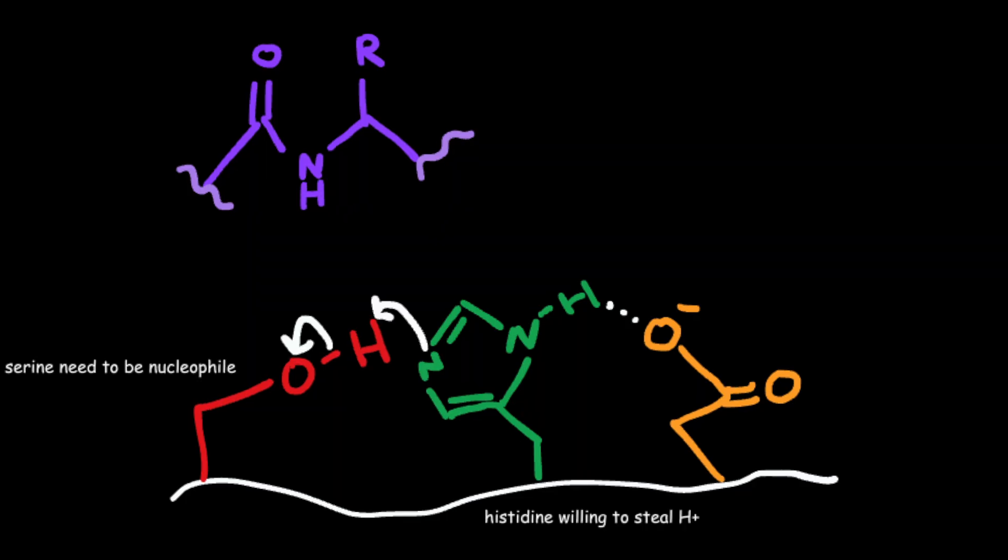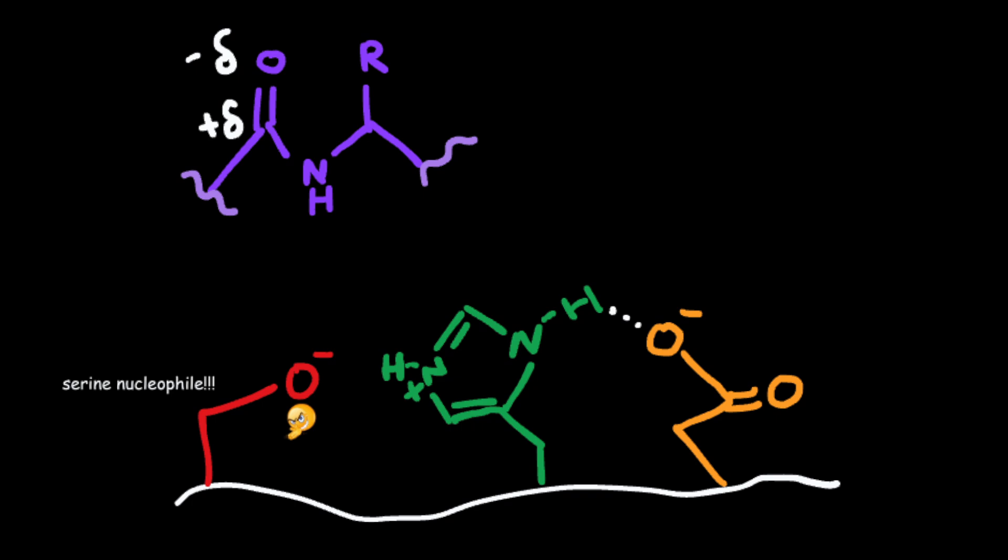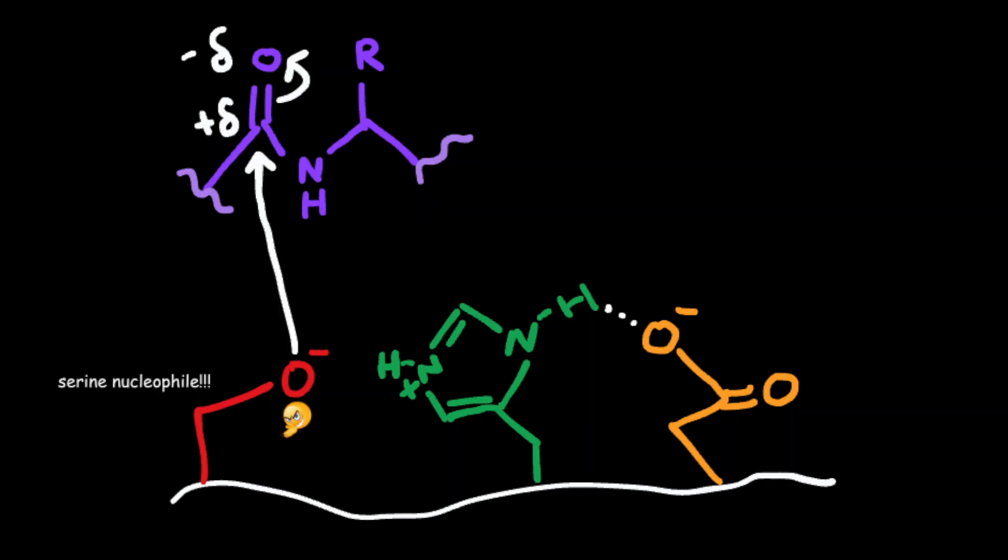To make serine a better nucleophile, histidine steals a proton from serine, and now serine's a really great nucleophile. Now serine really wants some positive charge. It's a nucleophile. And because of our carbonyl, there is a partially positive charged carbon that our oxygen on serine is going to attack.